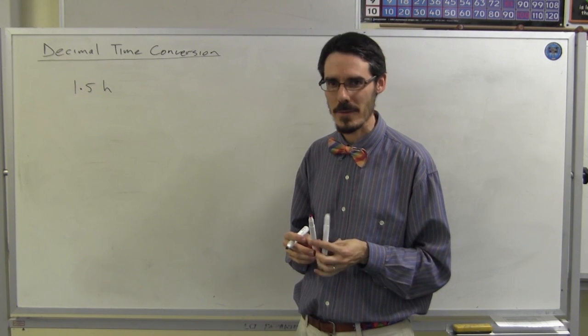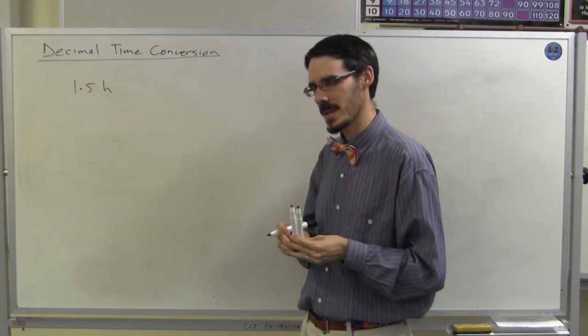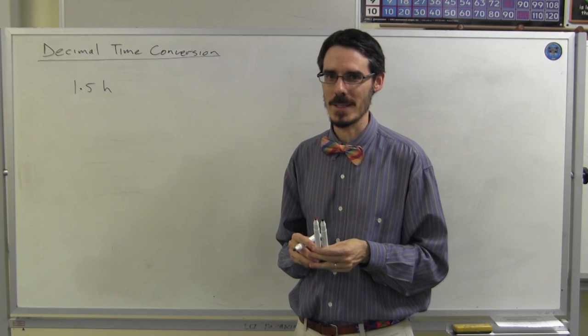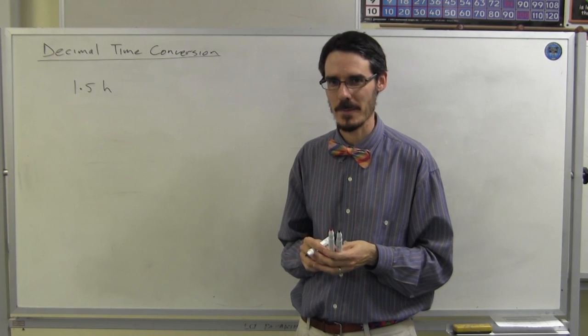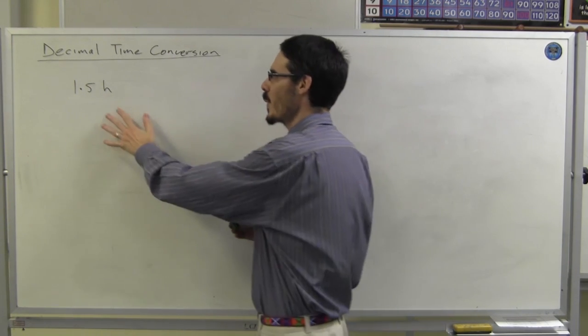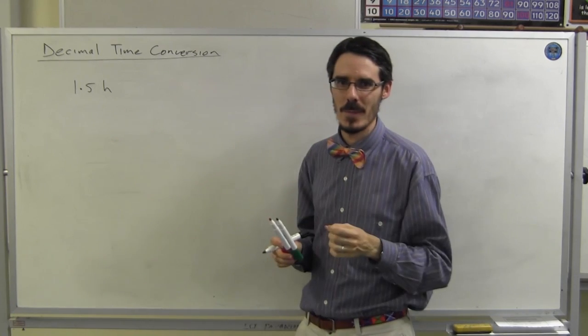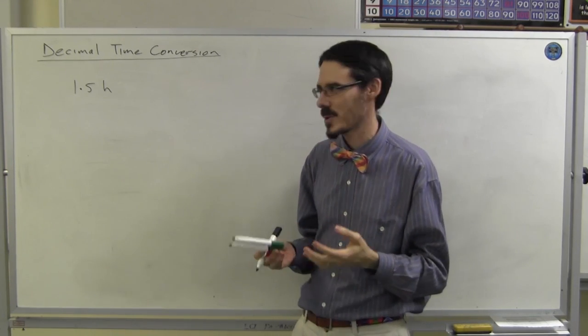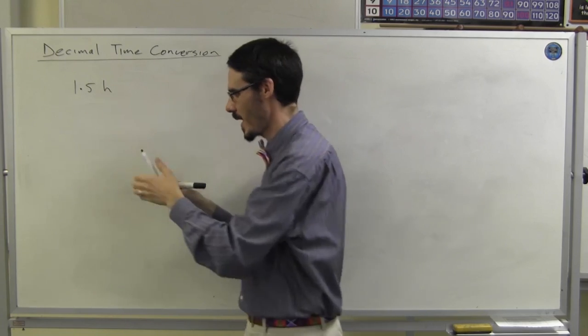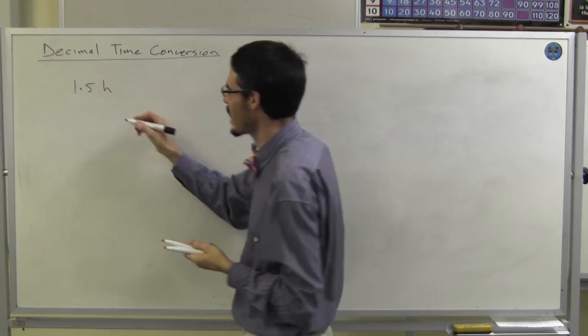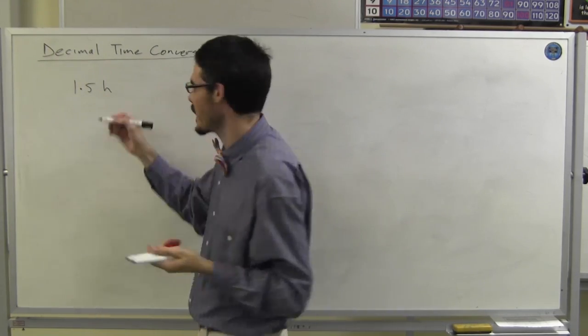Now, the same process works in reverse. I'm going to start with a really easy and obvious example, just to make the point. 1.5 hours. Now, when you see 1.5 hours, you'll straight away think, 0.5 is a half. That's 1.5 hours and half an hour is 30 minutes.